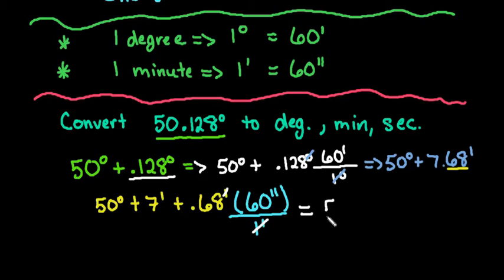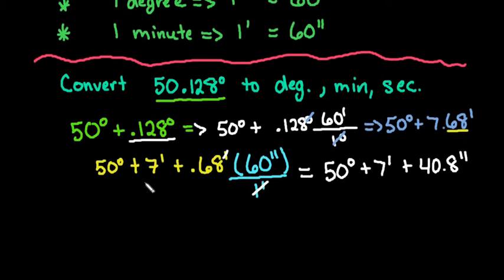So we can say that this is going to be 50 degrees plus 7 minutes plus if I take .68 times 60 I end up with 40.8 seconds. So if we now put this all together as a final answer we would be left with 50 degrees, 7 minutes, and 40.8 seconds.